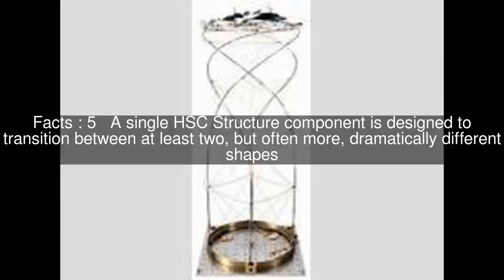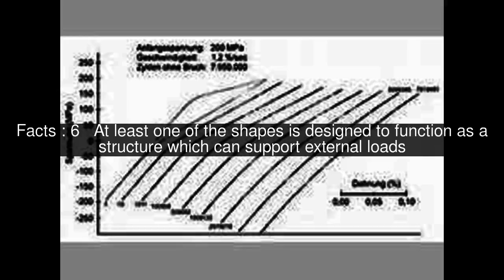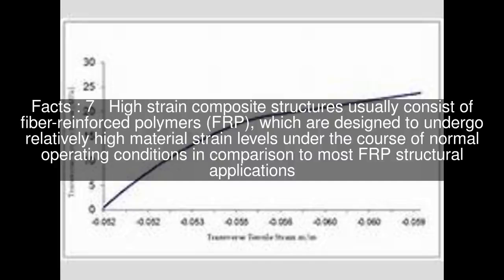A single HSC structure component is designed to transition between at least two, but often more, dramatically different shapes. At least one of the shapes is designed to function as a structure which can support external loads. High-strain composite structures usually consist of fiber-reinforced polymers.